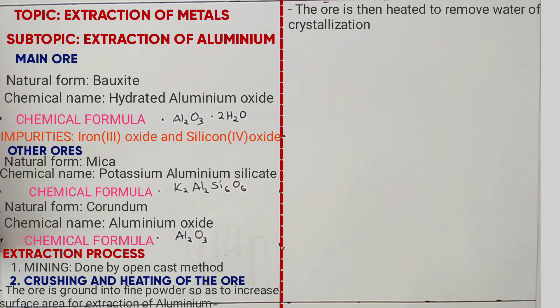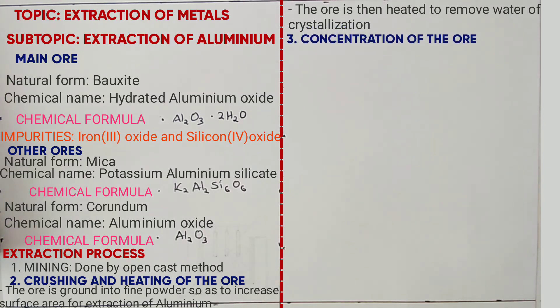Step 3 is concentration of the ore. The main aim of doing that is to remove the impurities. Concentration of the ore involves 3 stages.